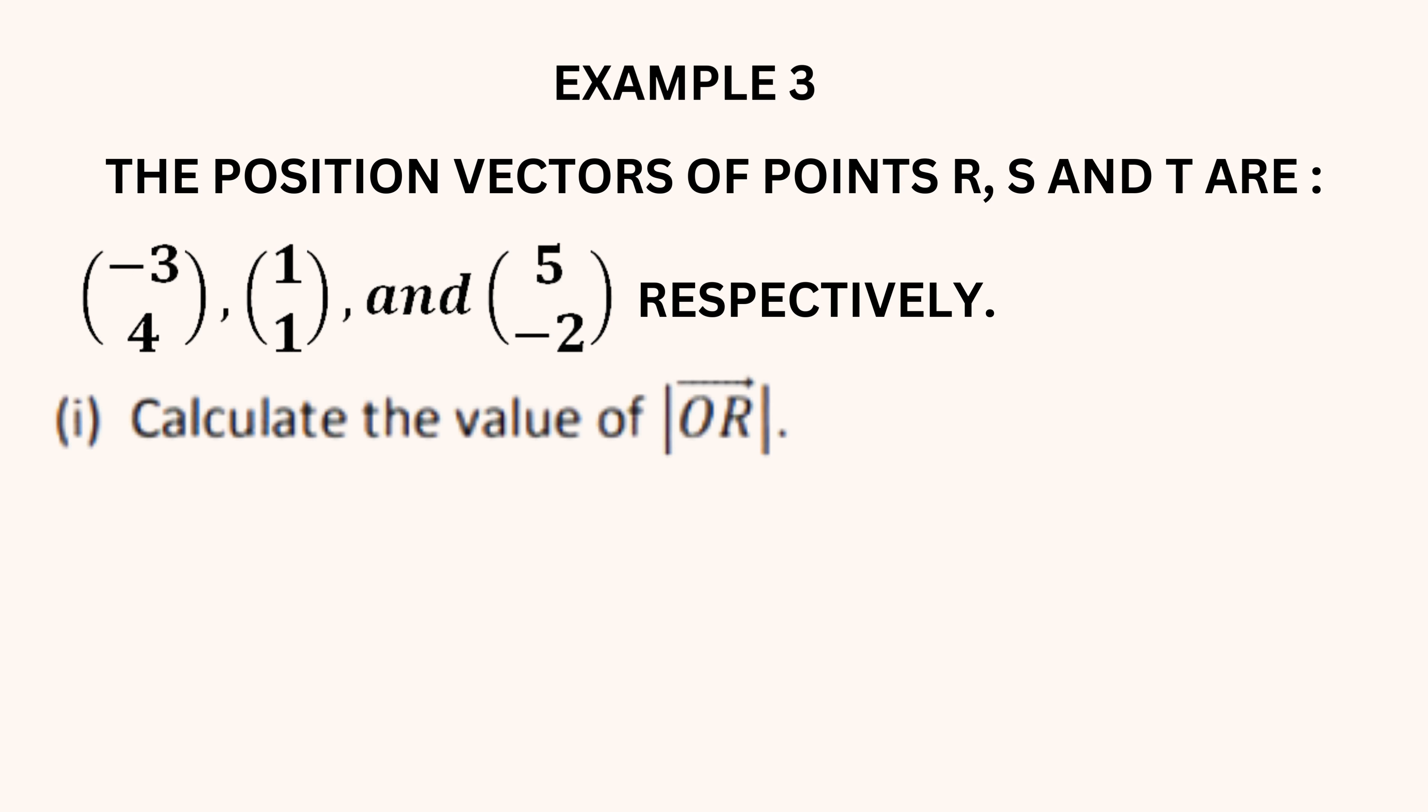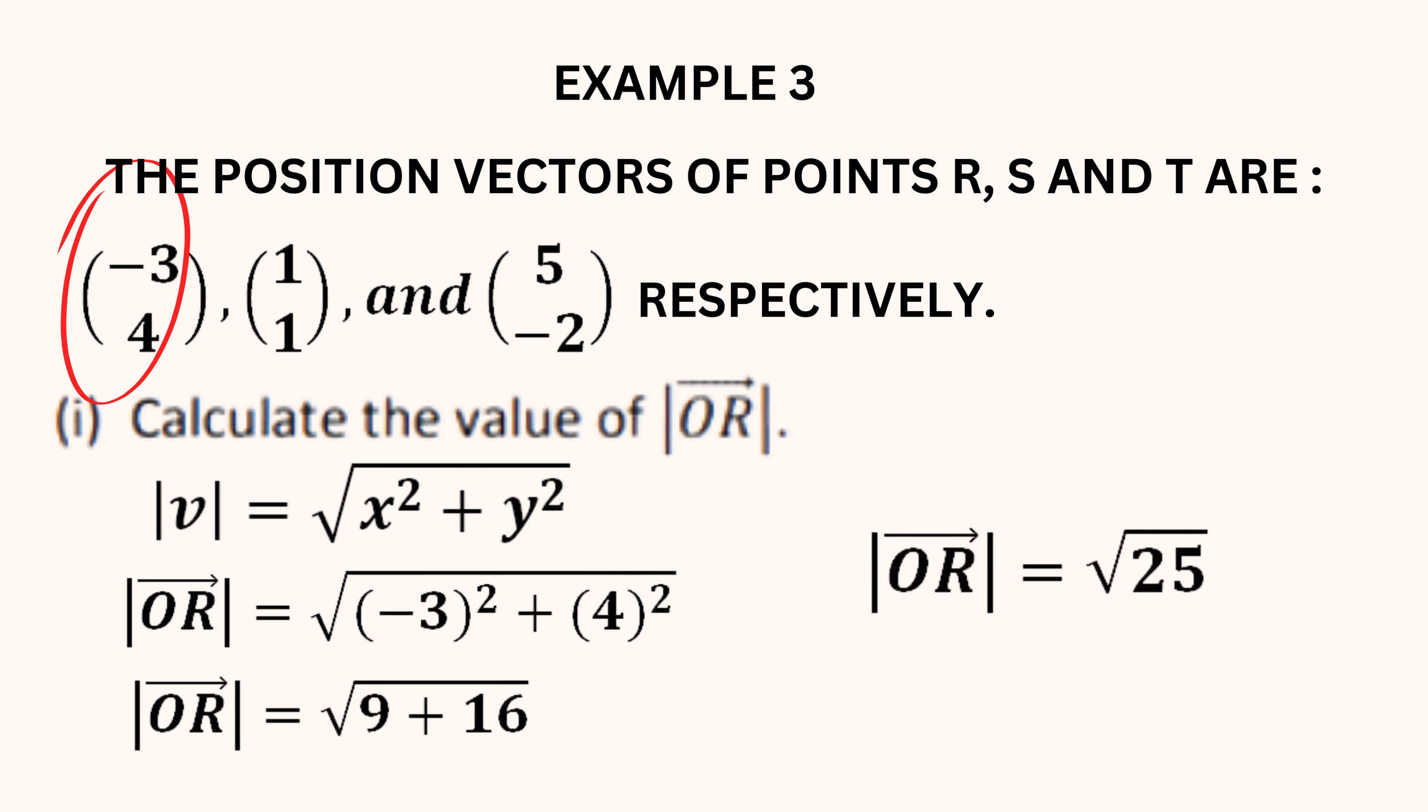In the third and final problem, we are given three position vectors. A position vector gives the position or location of a point relative to the origin O. In part one, we are finding the length or magnitude of the vector OR, which is (-3, 4). The magnitude of a vector is given by the formula root X squared plus Y squared. For the vector OR, X is negative 3 and Y is 4. Substitute these values and we get the length of the position vector OR to be 5 units.